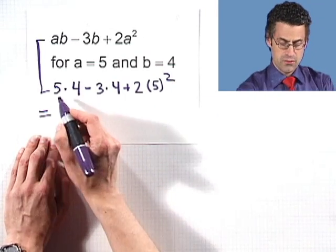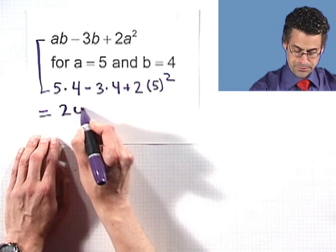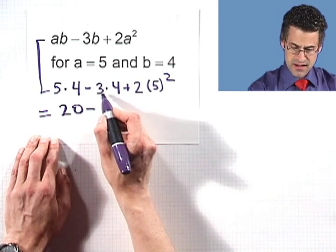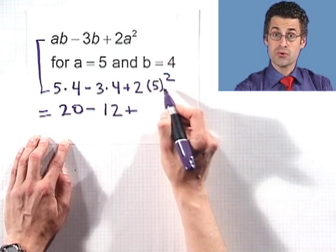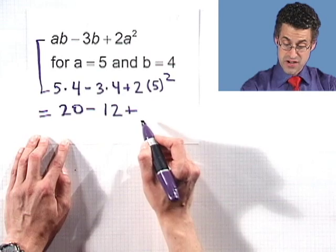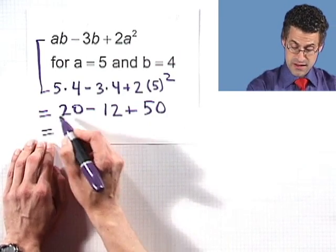Now what does that work out to be? Well, remember we do the multiplication first. So five times four is 20 minus, and then here we have three times four, which is 12 plus, and then we take five and square it. So that's going to be 25 times two is 50. So now we have to add and combine these numbers.